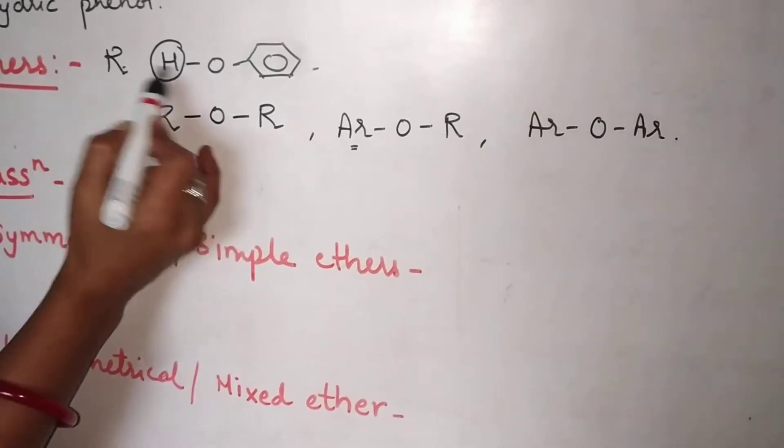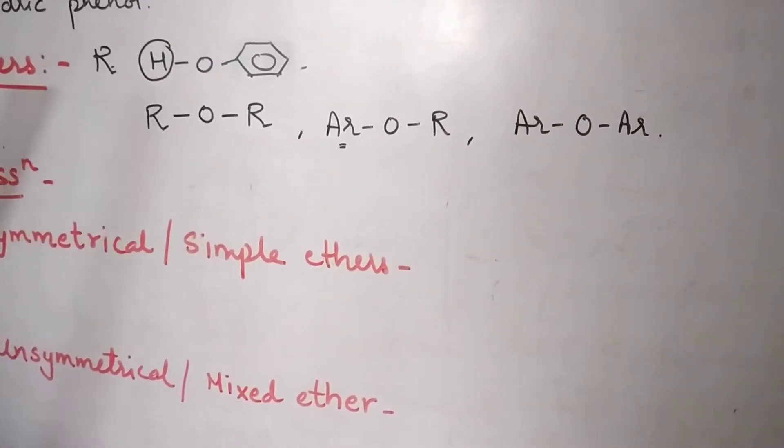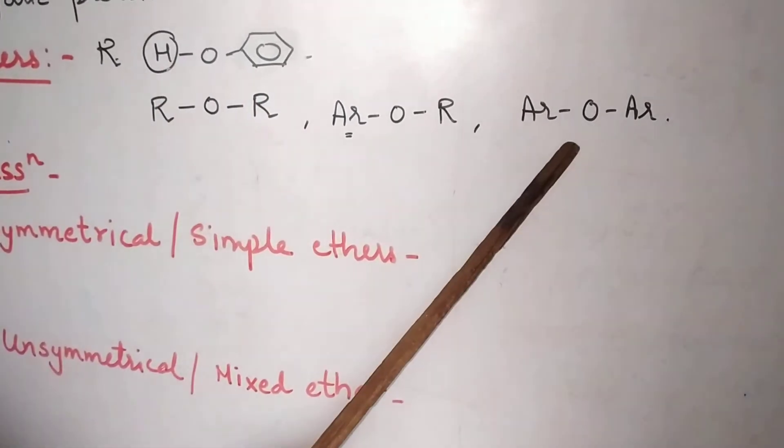Ether is formed. It is R and it is aromatic ring, or it can be both the Ar rings, aromatic nucleus present on both sides of oxygen.